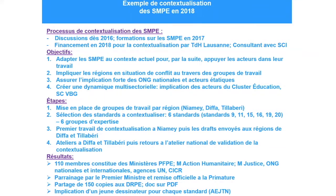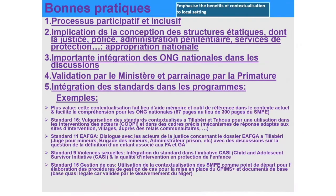The results are quite interesting. We were able to involve 110 members, including ministries of child protection, humanitarian action, and justice, national and international NGOs, UN agencies, and the ICRC. The sub-cluster was sponsored by the Prime Minister, and an official presentation of the contextualization was made at the Prime Minister's office in October 2018. Hard copies were shared and a PDF document was made available for wide distribution. To ensure youth participation, a young illustrator from the Association of Working Children and Youth of Niger was involved to draw and interpret each standard in his own way.